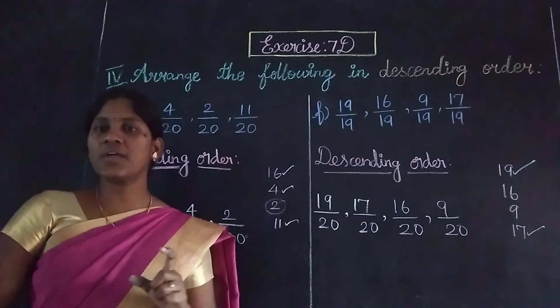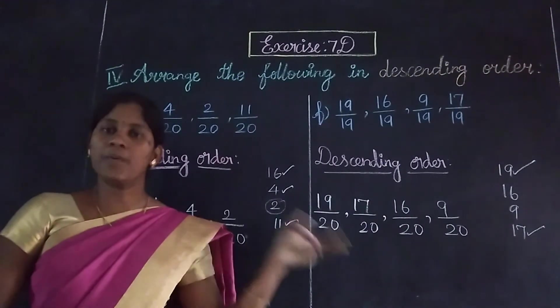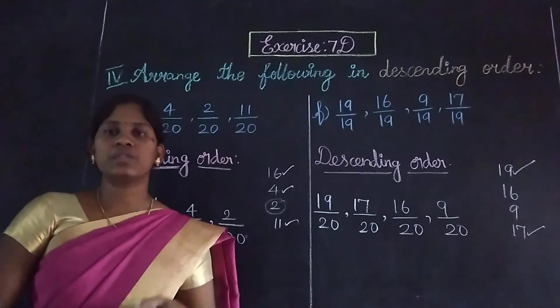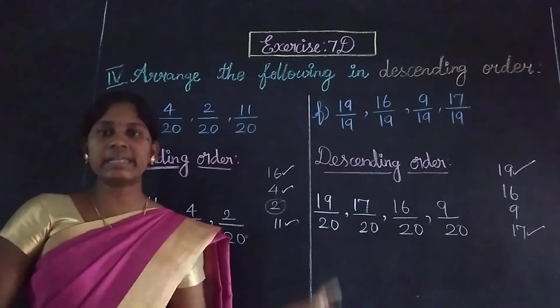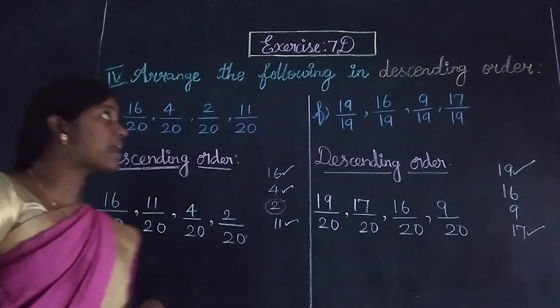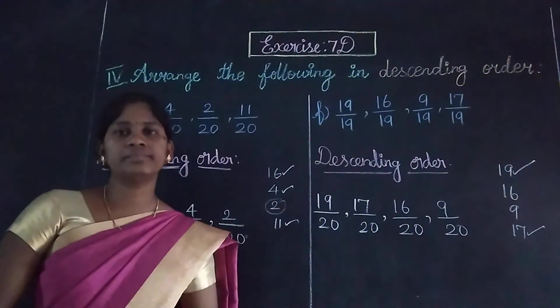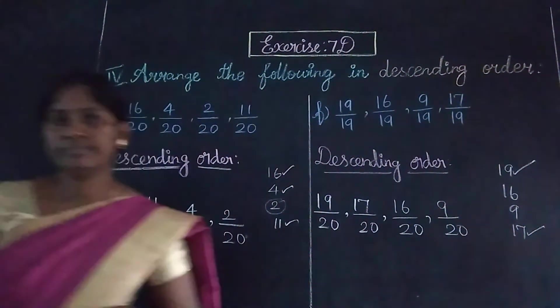Ascending order is the opposite of descending order. Descending order is big to small. The exercise is finished. Thank you, students.